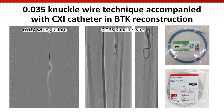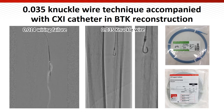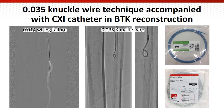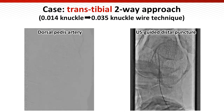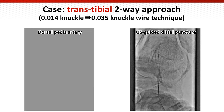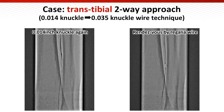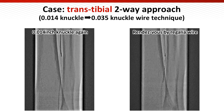We therefore switched from the 0.014 system to the 0.035 system. A NAKU wire technique using the Terumo 0.035 J-tip wire accompanied with the CXI 4-French catheter was applied to cross the lesion. After the 0.035 wire was just positioned above the true lumen, the dorsalis pedis artery was punctured under duplex ultrasound guidance. The 0.014 NAKU wire was again advanced, and we confirmed the antegrade wire touched the wire from the dorsalis pedis artery. Finally, wire rendezvous using the Regalia wire was successfully achieved.